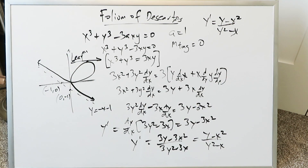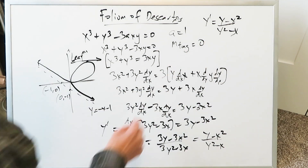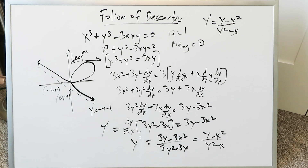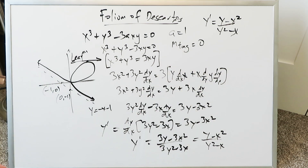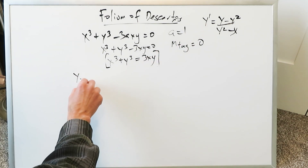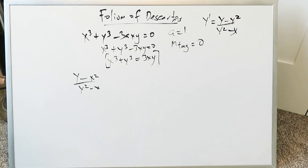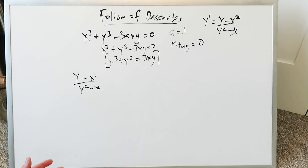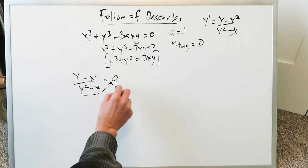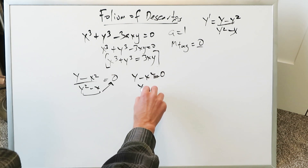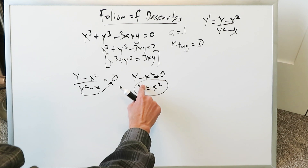From this we determine where the horizontal tangent line occurs. We have dy/dx equals (y minus x squared) over (y squared minus x). For a slope of 0, we set the numerator equal to zero: y minus x squared equals 0, so y equals x squared. This gives us an expression we can substitute back into the original curve equation.